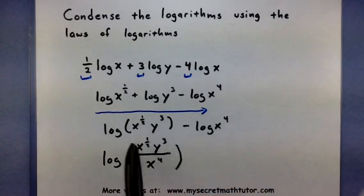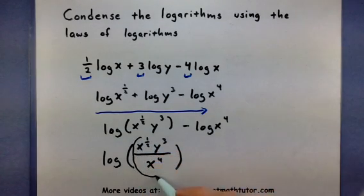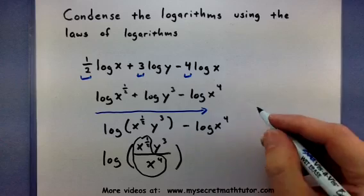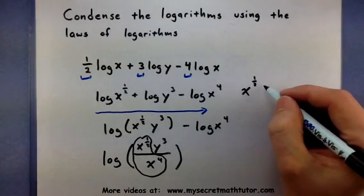Now this takes it down into a single logarithm. But notice how on the top and in the bottom, we still have an x. Well, one thing I can do is work on these x's by using the property for exponents that says I can subtract them. So x to the 1 half,